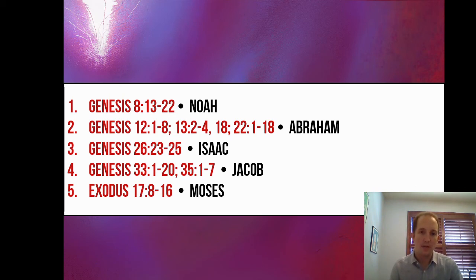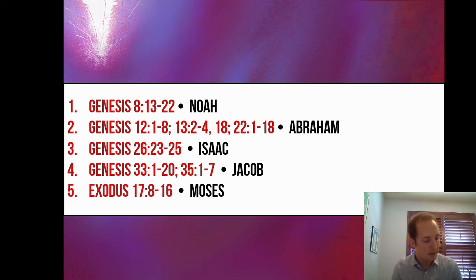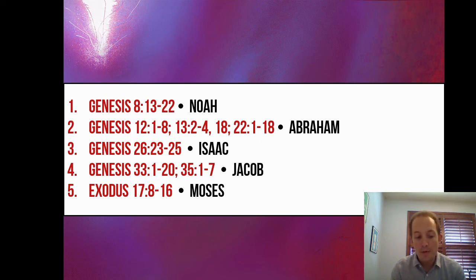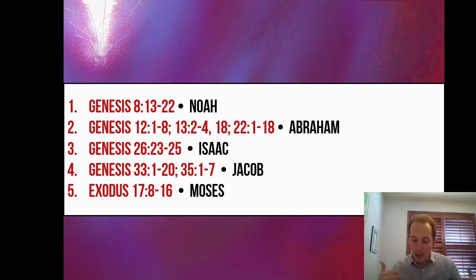Going over two chapters to Exodus chapter 20, verse 22 says: 'The Lord said to Moses, Thus you shall say to the sons of Israel — you yourselves have seen that I have spoken to you from heaven. You shall not make other gods beside me, gods of silver or gods of gold. You shall make an altar of earth for me and you shall sacrifice on it your burnt offerings and your peace offerings, your sheep and your oxen. And in every place where I cause my name to be remembered I will come to you and I will bless you.' And if you make an altar of stone for me you shall not build it of cut stones. It's this idea: I will come to you and I will bless you, I will come near and I will bless you.